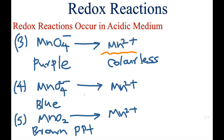In the fourth reaction, manganate ion takes blue color and manganate becomes Mn²⁺. Mn²⁺ takes no color. The fifth reaction involves MnO₂, which is a brown color precipitate.